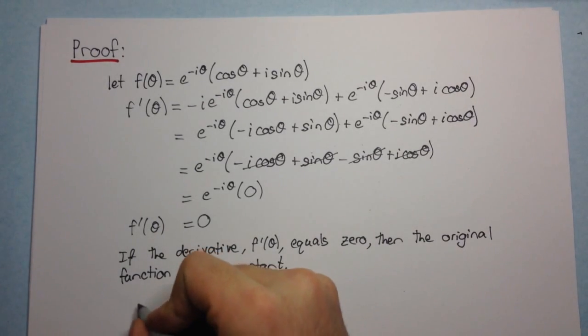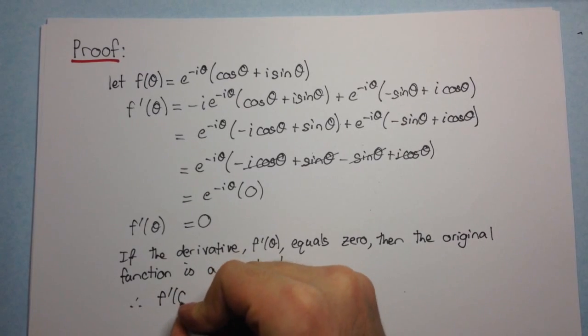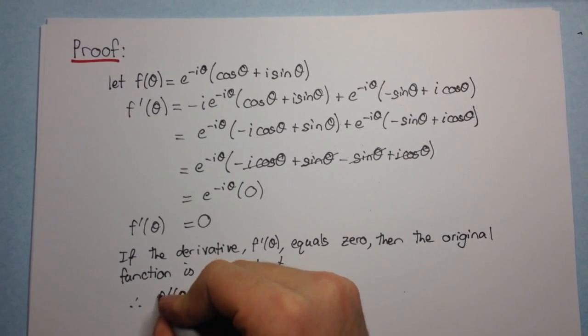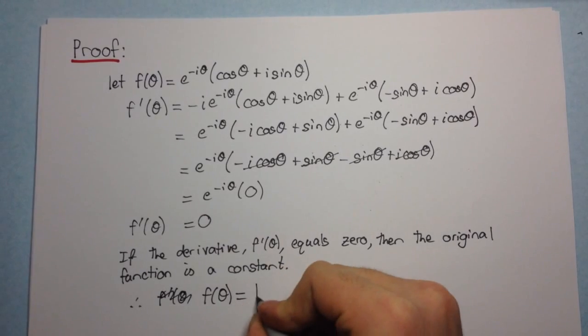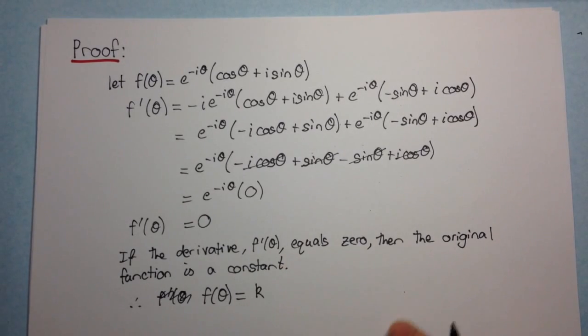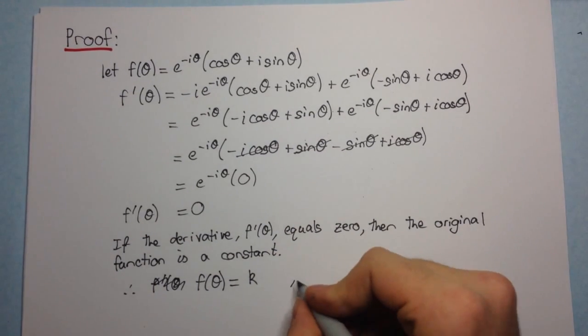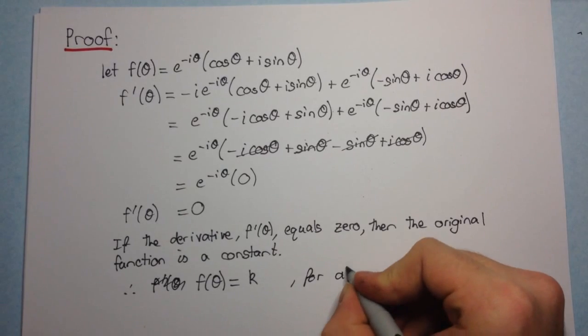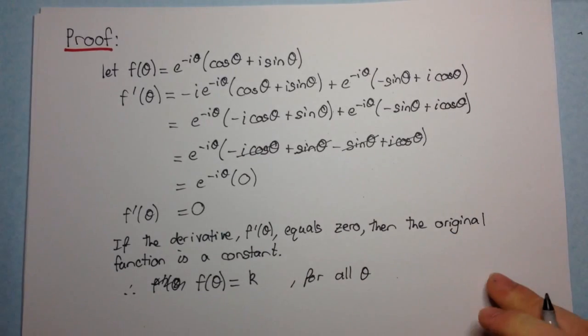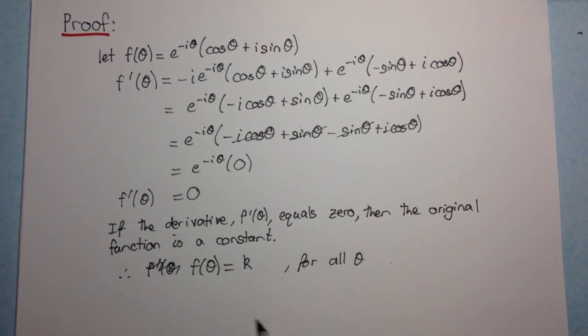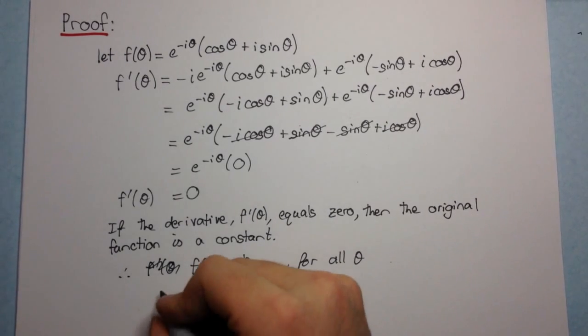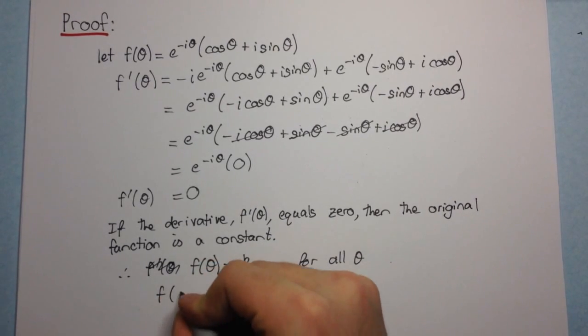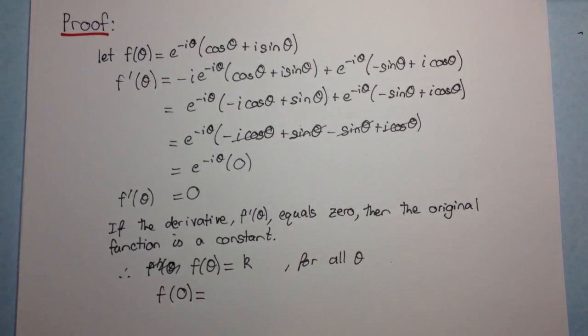So we have, therefore, f of theta, the original function, is equal to k. So it's just a constant. And this is for all theta. Okay. Now, we need to determine the value of k. So if we plug in, say, theta equals to zero. So f of zero equals.